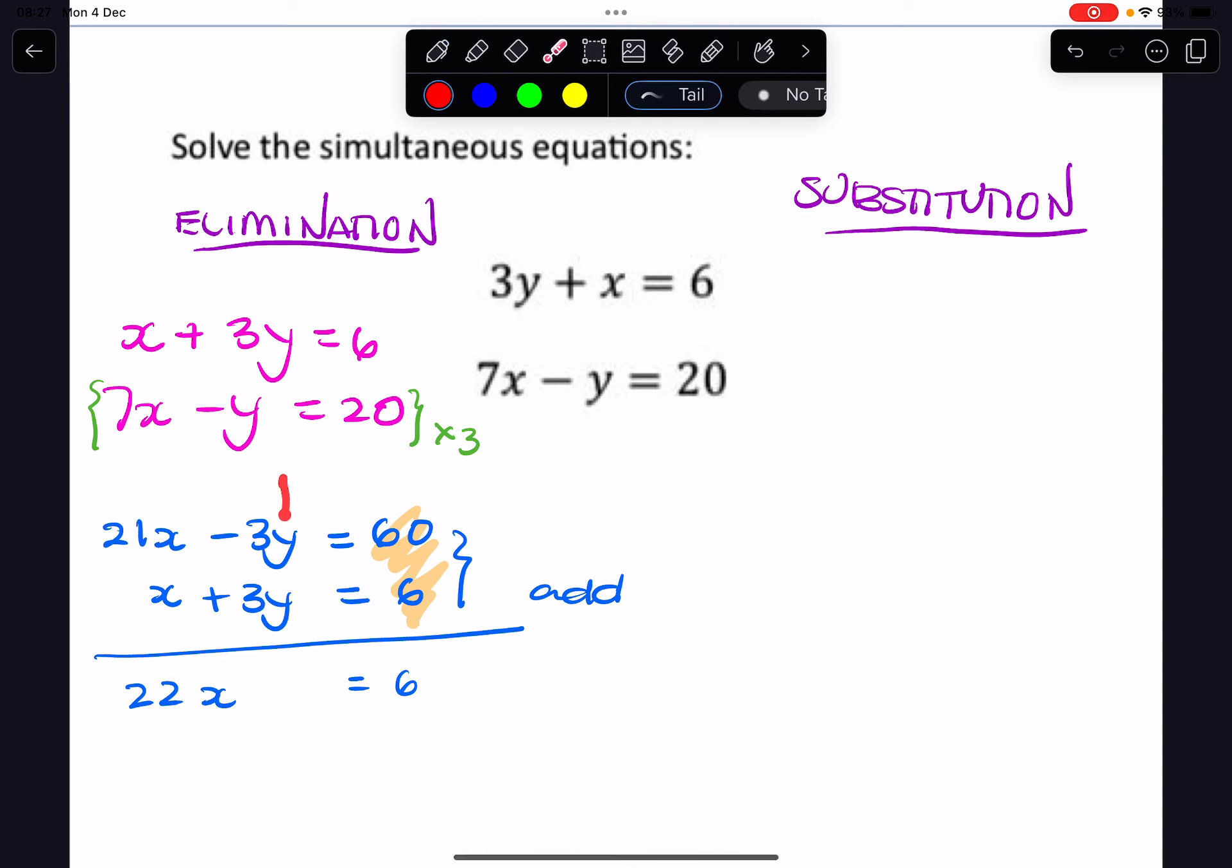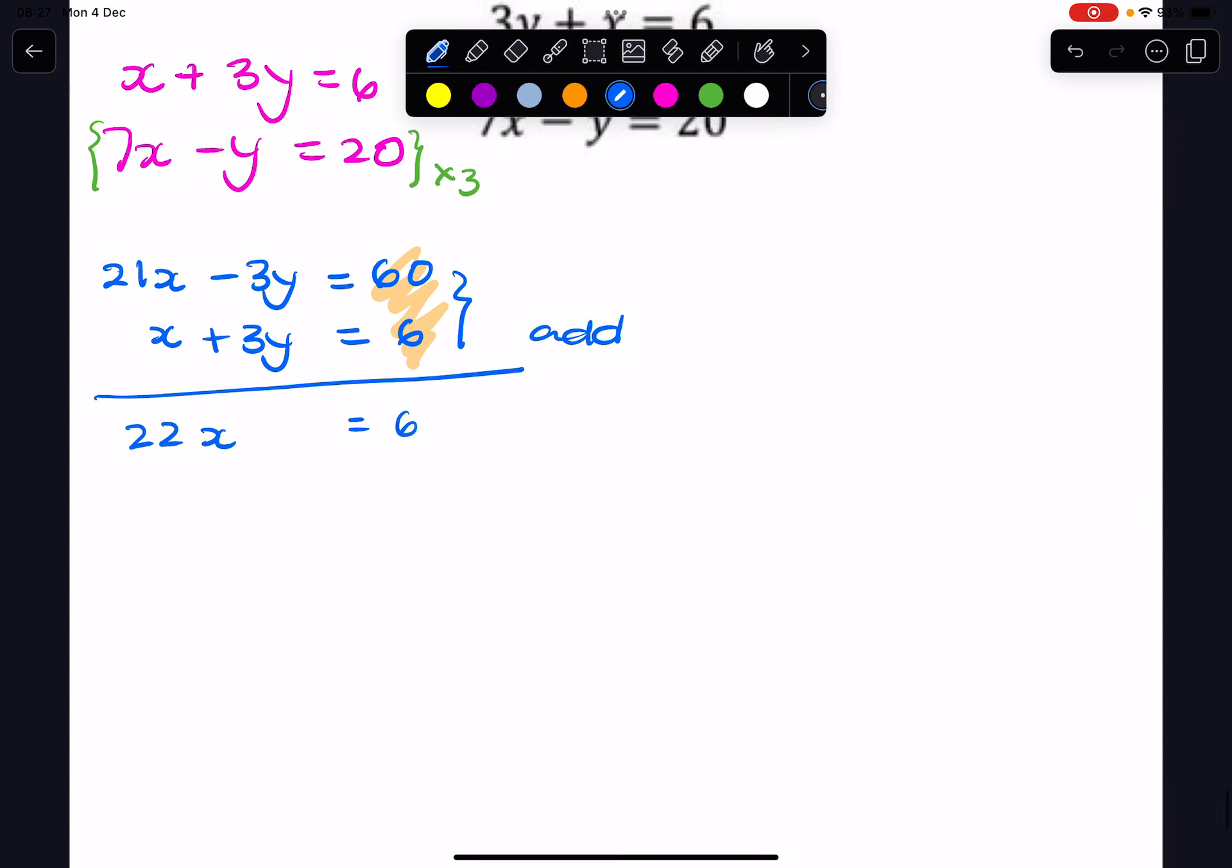So the y's have been eliminated, so now we only have one variable x, so that's easy to solve. We can... sorry, 60 plus 6 is 66 of course. We can then divide 66 by 22, and that'll give me 6. So now we've found the value of x.